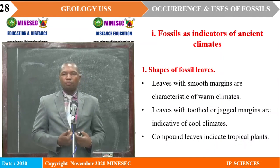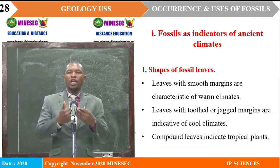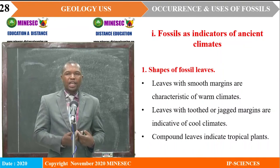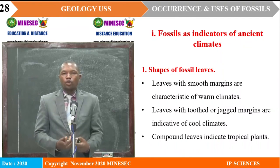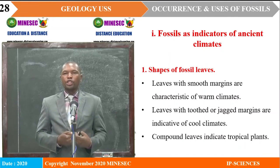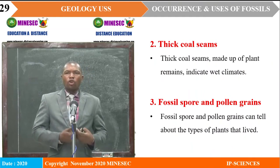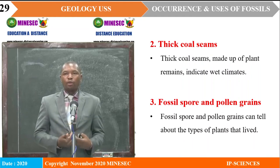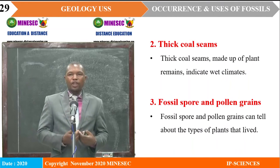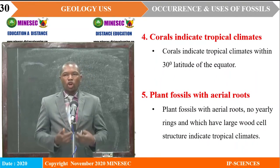The first indicator is the shape of fossil leaves. Leaves with smooth margins are characteristic of warm climates, while leaves with tough or jagged margins are indicative of cold climates. Compound leaves indicate tropical plants. Thick coal seams — especially those made up of plant remains — indicate a wet climate, while fossil spores and fossil pollen quickly point to the types of plants that lived in the past. Corals indicate tropical climates, found preserved especially at latitudes within 30 degrees of the equator.